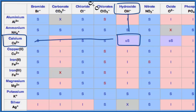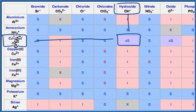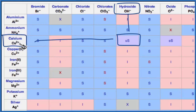So when you put calcium hydroxide in water, some of it will dissolve — not a lot — but some will split apart and dissociate into its ions. You'll have some Ca2+ calcium ions and then hydroxide ions, OH-. In fact, you'll have two hydroxide ions for every one calcium ion.